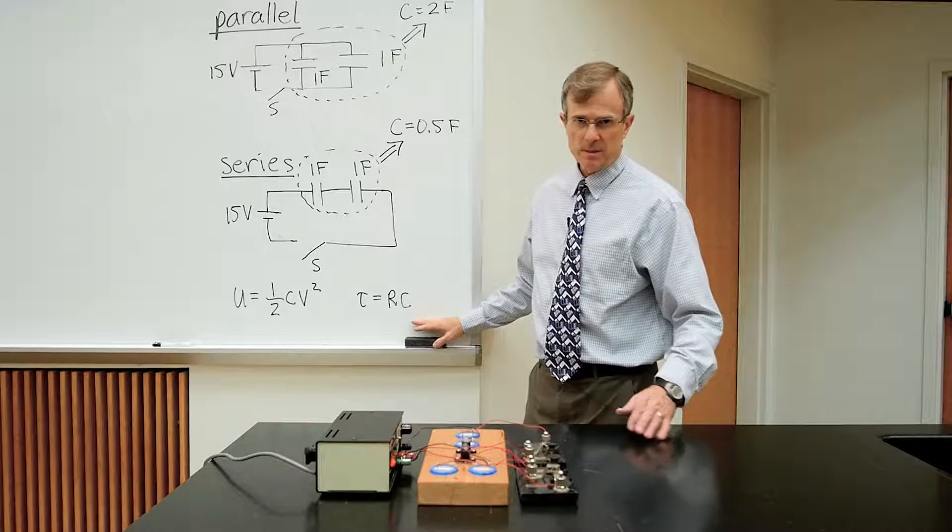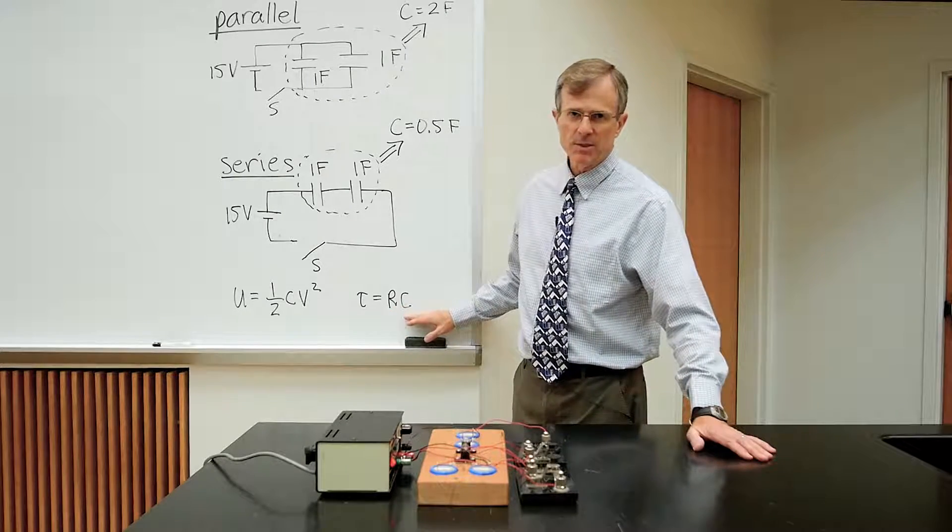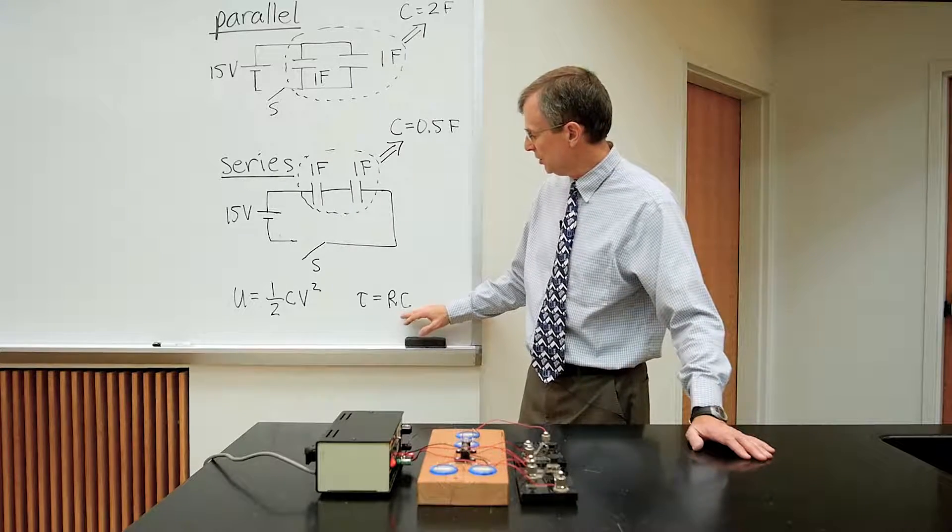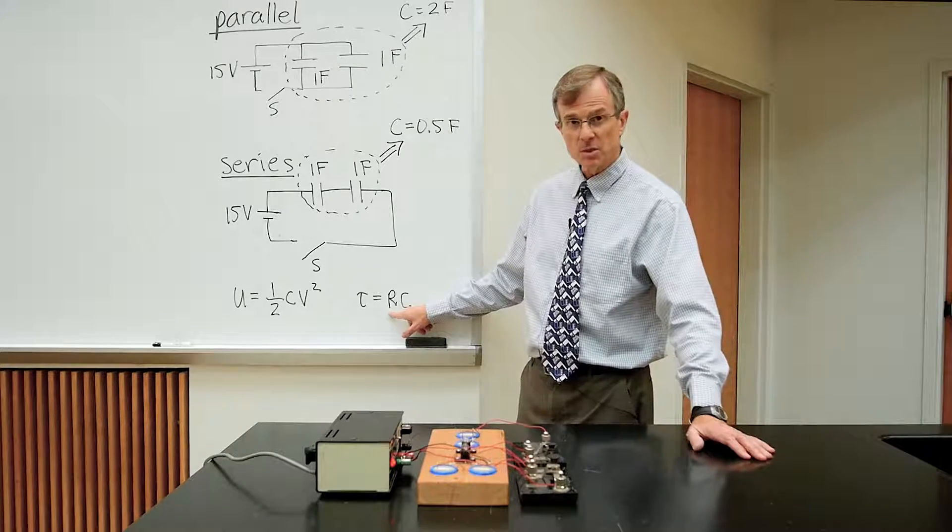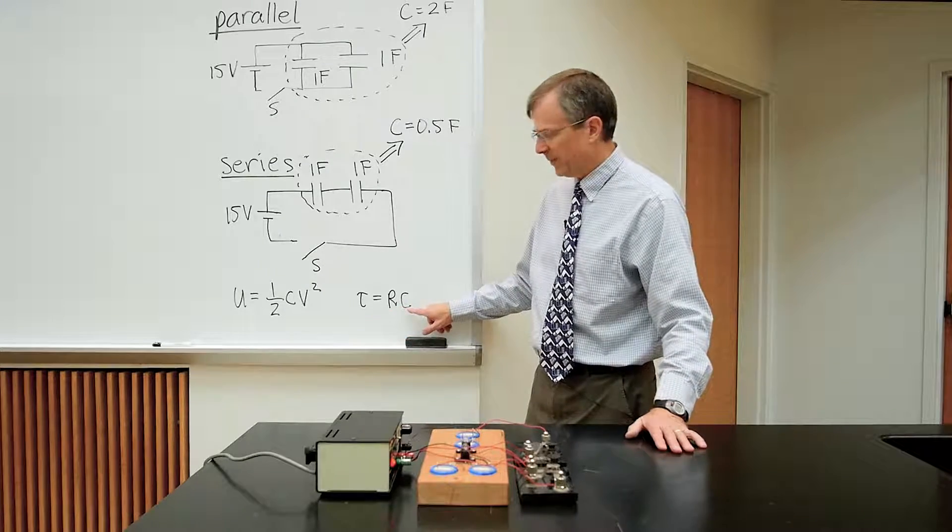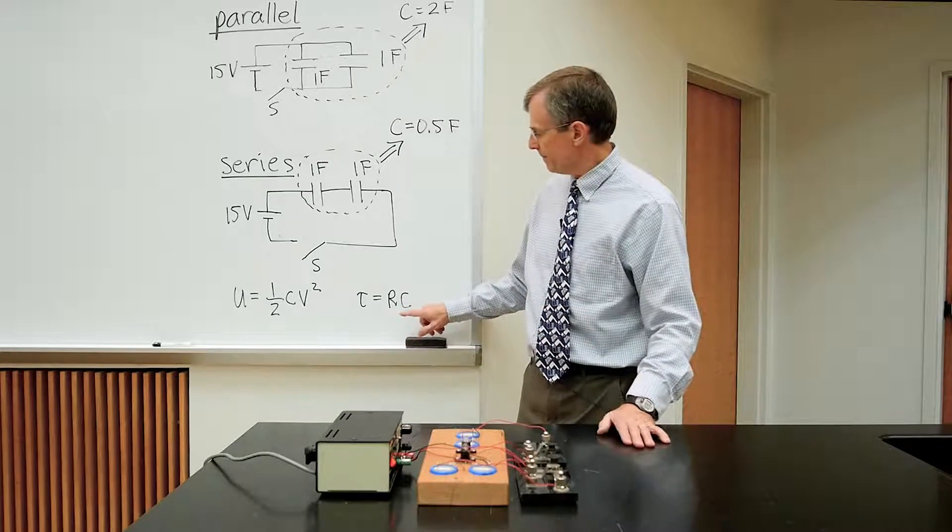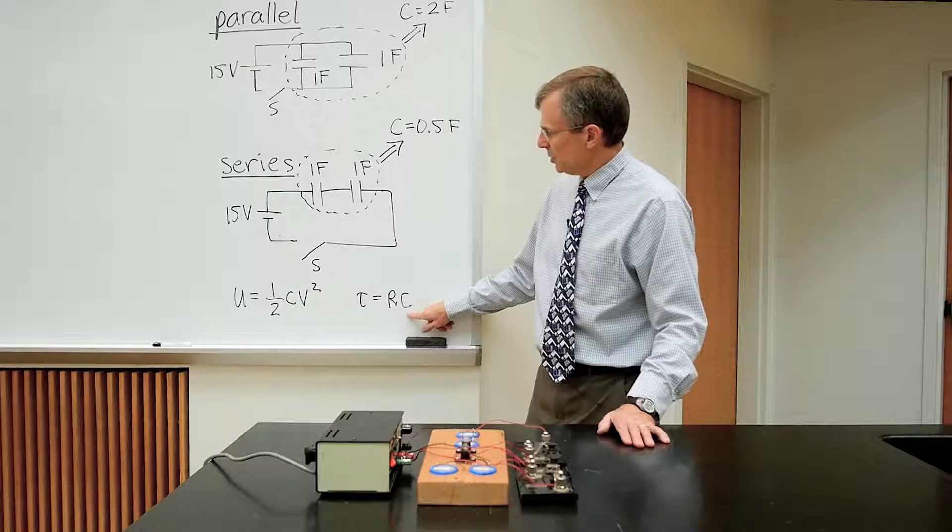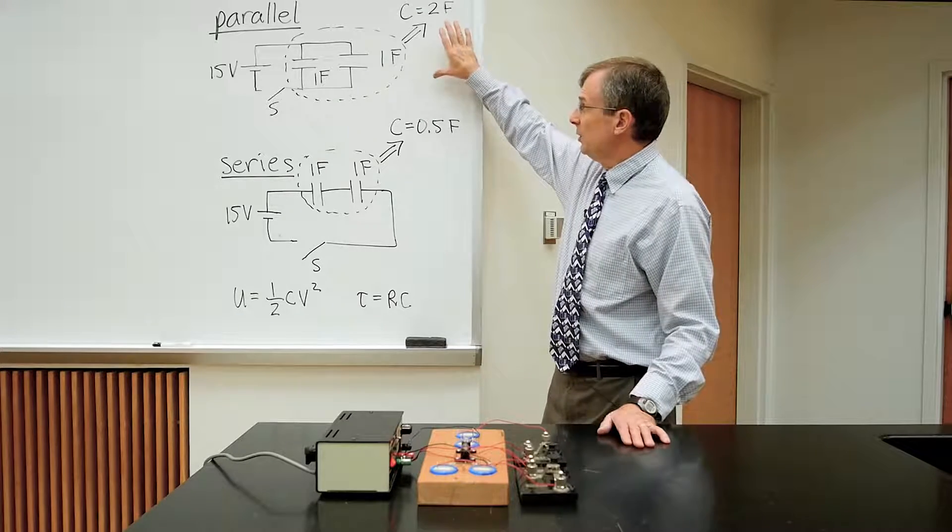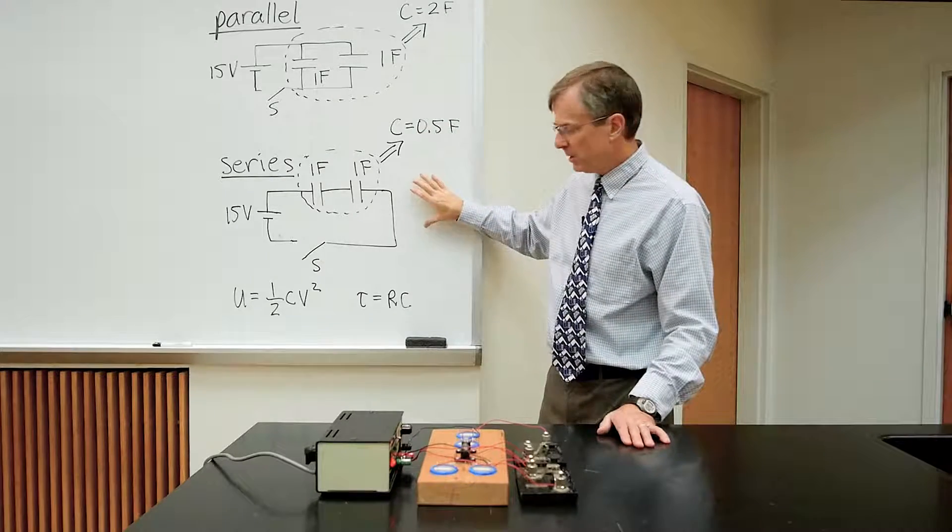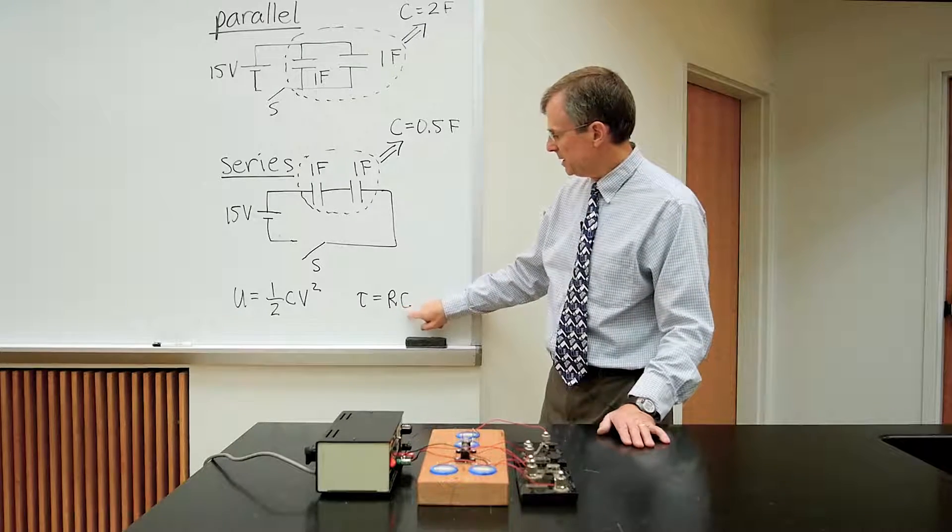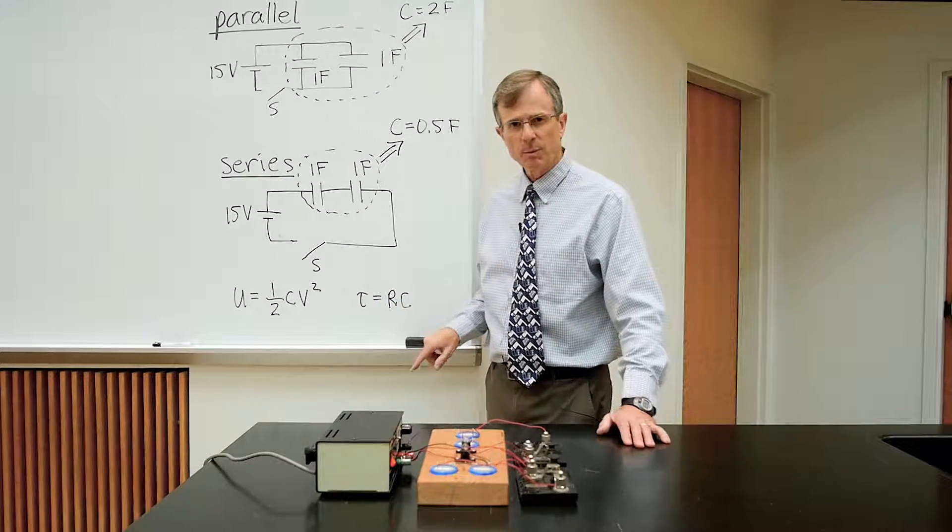And the time constant. This governs how long it takes to charge these capacitors up to their maximum potential. That goes like the resistance in the circuit, whatever that resistance turns out to be for this particular circuit, which is the same for both circuits, times the capacitance. So not only will the energy stored in this parallel circuit be larger than in the series circuit, but also the time constant. It will take longer for them to charge up because this time constant is proportional to the capacitance.